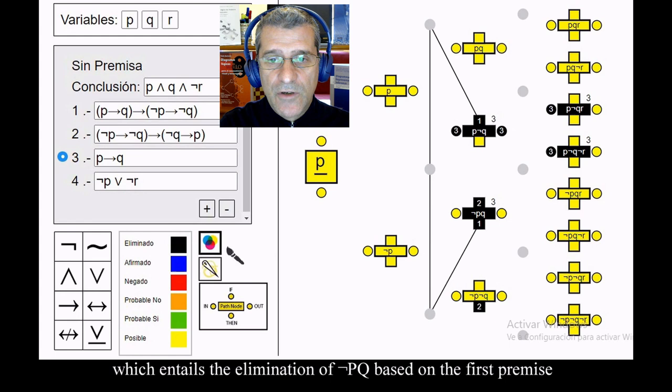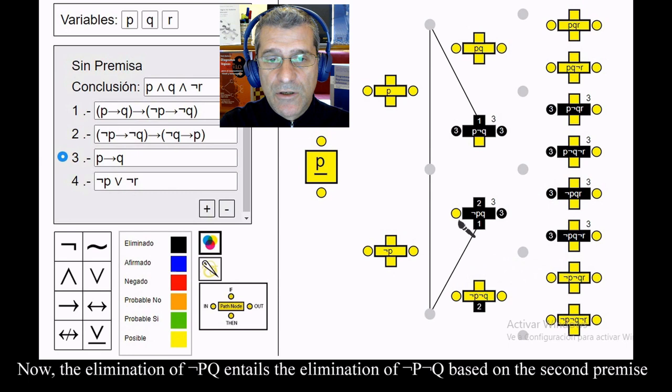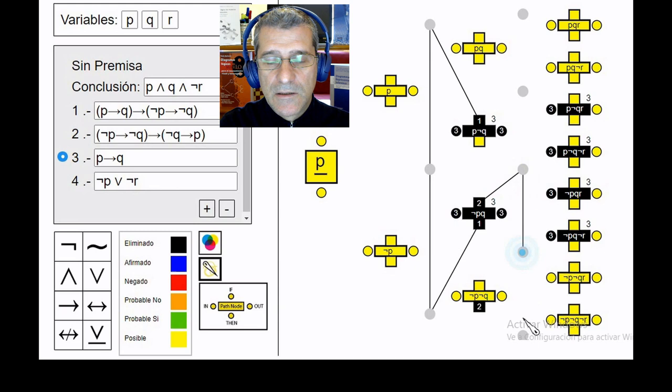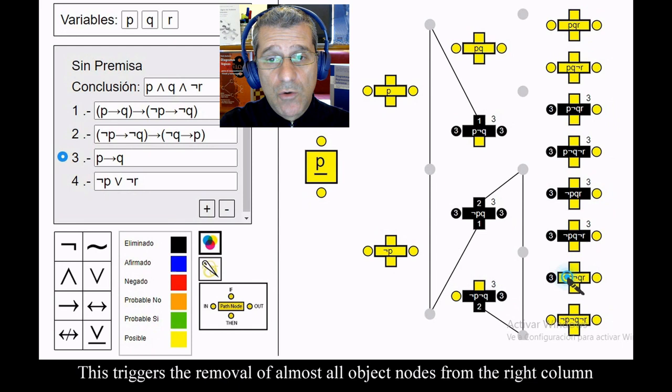Now, the elimination of node p node q entails the elimination of node p node q based on the second premise. This triggers the removal of almost all object nodes from the right column. The node node p is removed because none of its objects exists anymore.